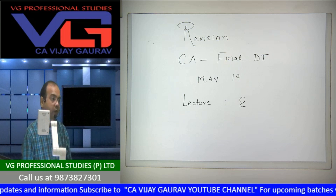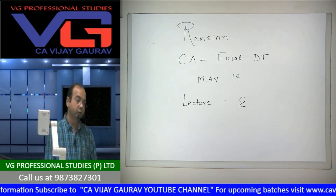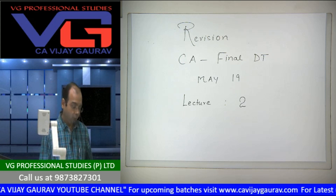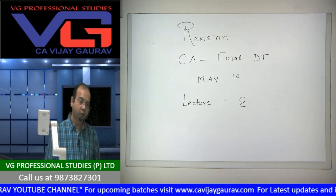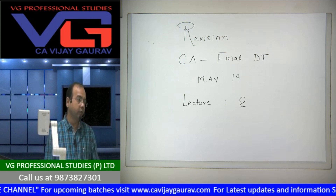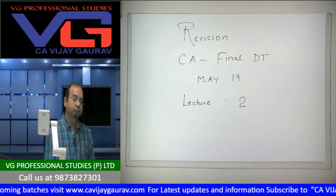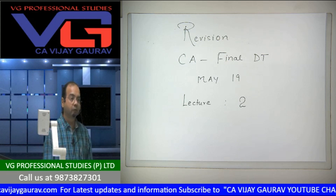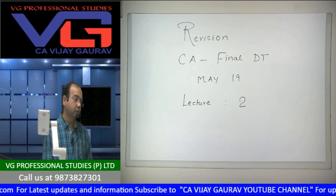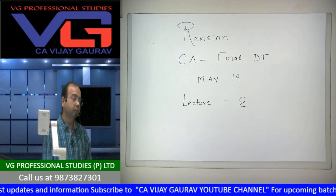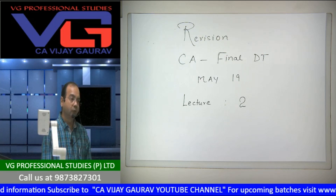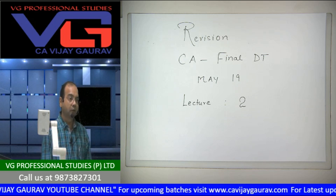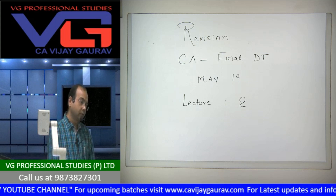Business Profession Chapter, Section 28 - Charging Section. Important amendment in Section 28: compensation on modification or termination of terms and conditions of a contract, whether of revenue nature or capital nature, shall be chargeable to tax under this chapter.